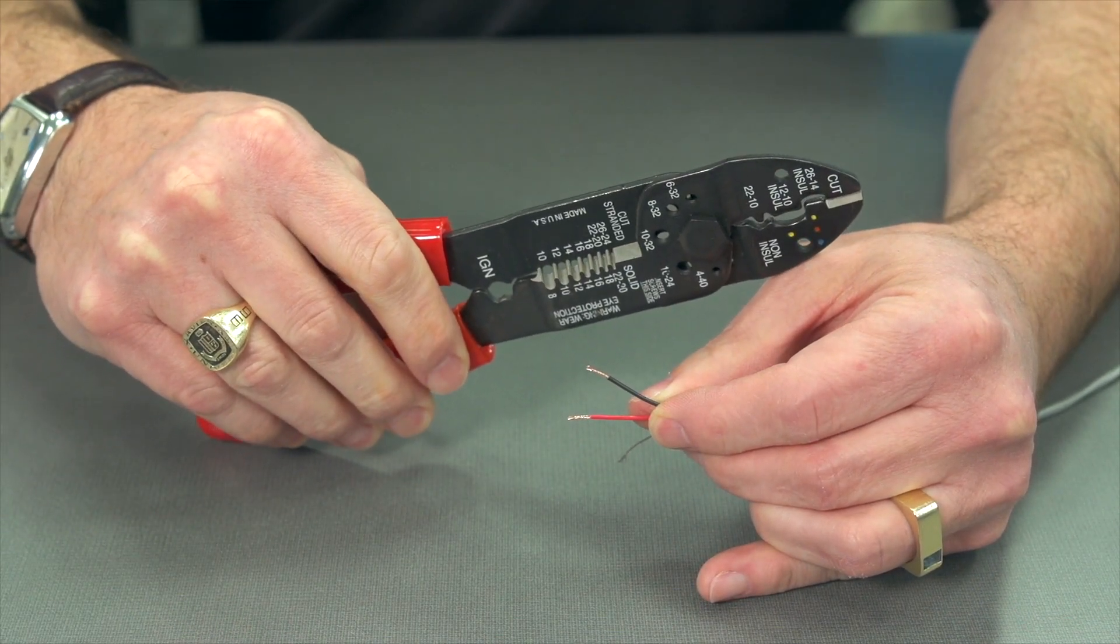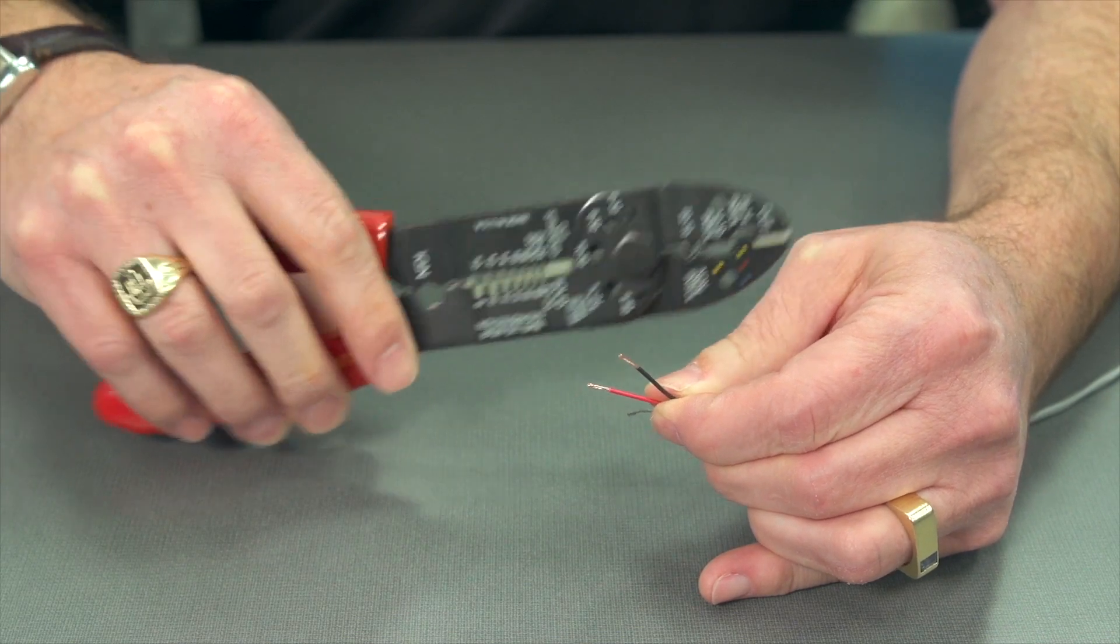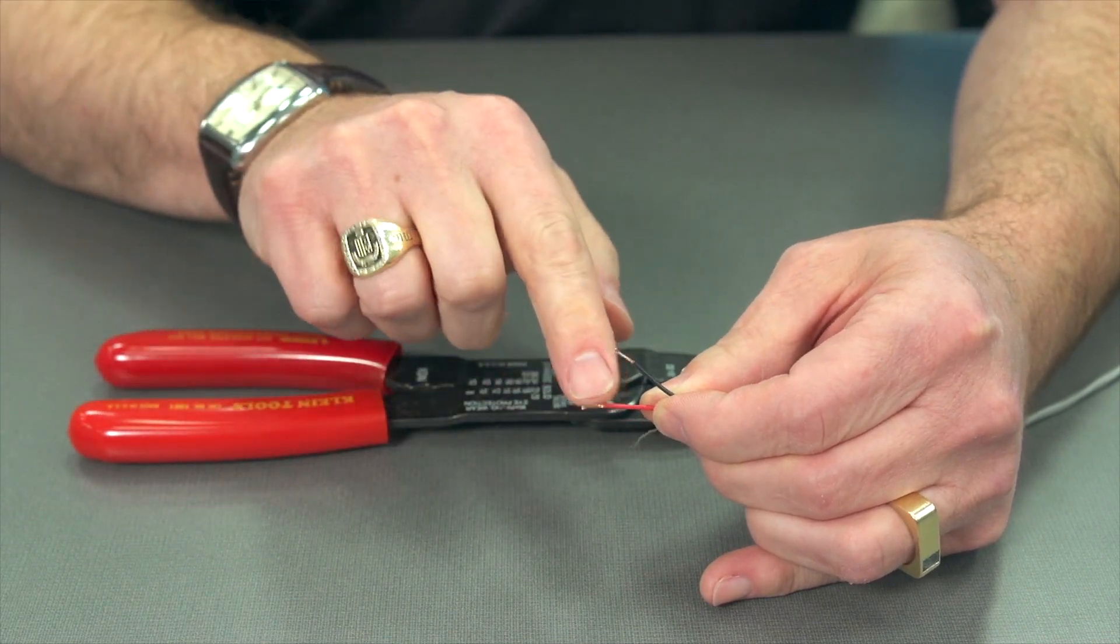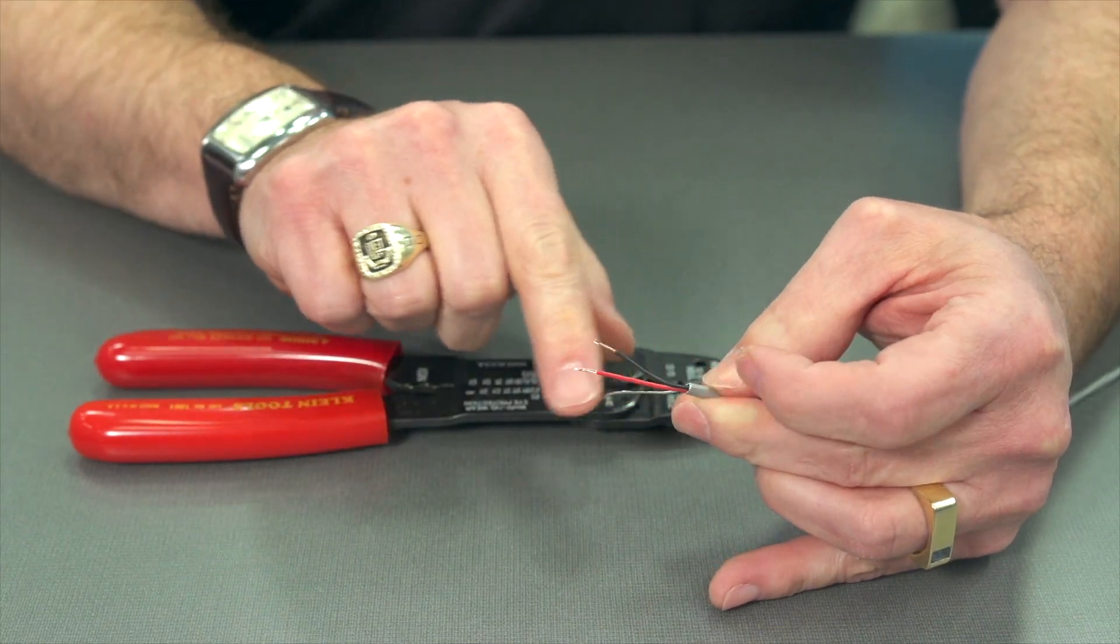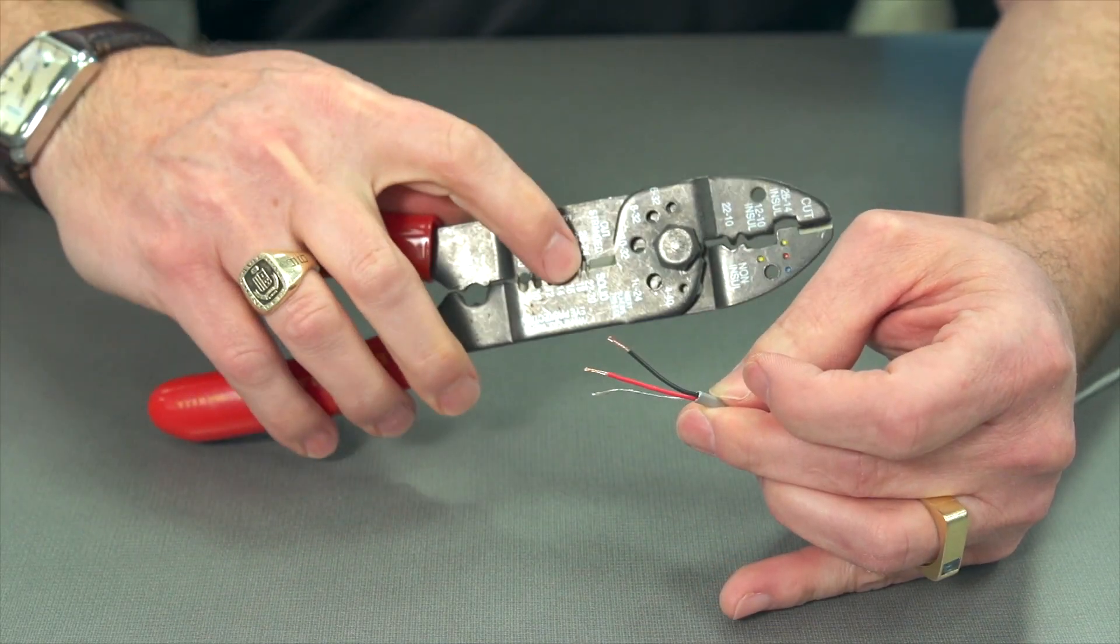This one has the proper size holes. It's going to do a great job and it's not going to leave rough edges like this will. And we won't lose any strands in the process because these holes are the right size.